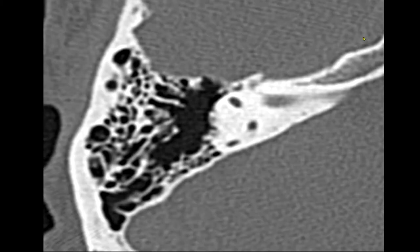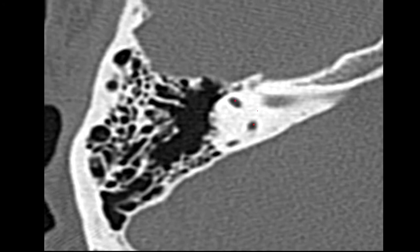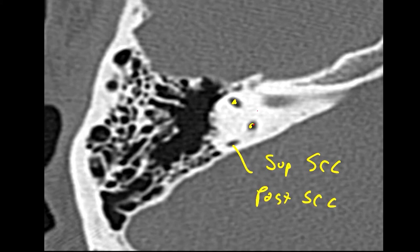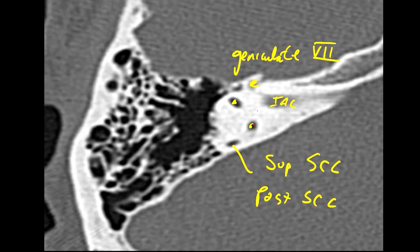Here we're seeing portions of the semicircular canals. We have the two crura of the superior semicircular canal and a portion of the posterior semicircular canal. We're just at the very top of the internal auditory canal, seeing a small portion of the geniculate ganglion — the ganglion of the seventh cranial nerve.